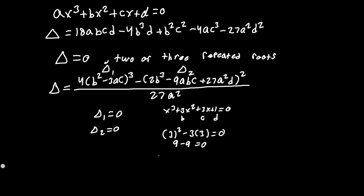Let's verify Δ₂: 2(3³) - 9(1)(3)(3) + 27(1)(1) = 54 - 81 + 27 = 0. So Δ₂ = 0 as confirmed.